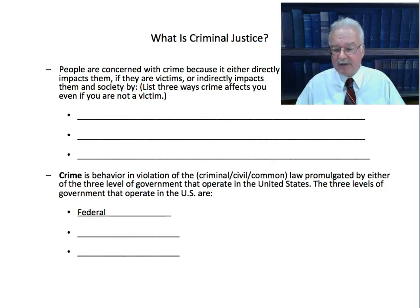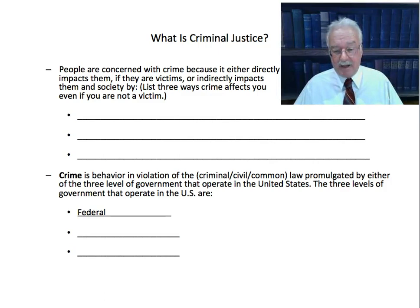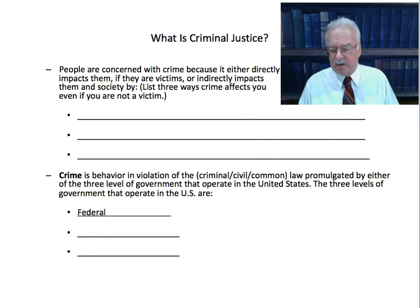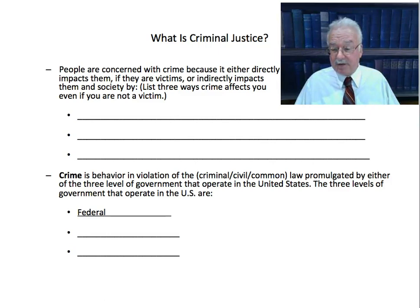The three levels of government in the US are the federal government, the state government — each state has its own criminal laws — and finally the local government: cities, towns, counties. Criminal laws are passed at all levels, usually by the legislature — at the federal level, Congress; at the state level, usually a state House of Representatives and Senate, though some states call it the Assembly; and at the county and local level, town councils, county supervisors, and city council members. So these are all bodies that create criminal laws, and if you break them, you pay the price.